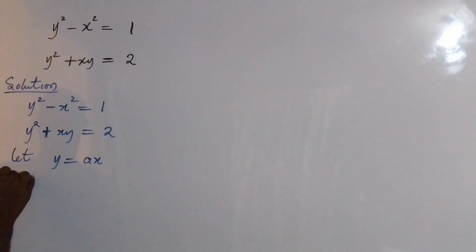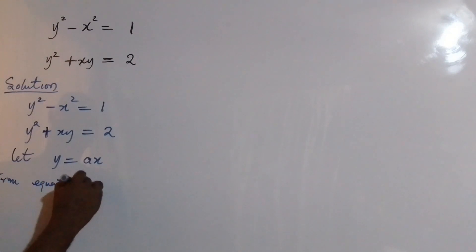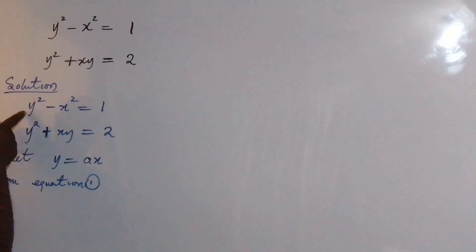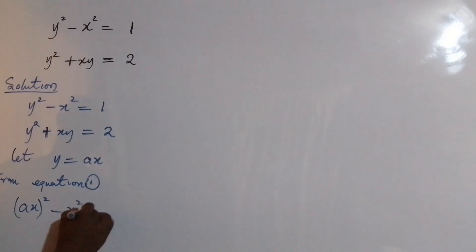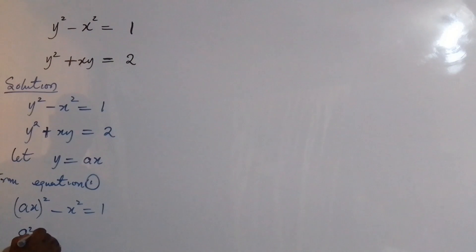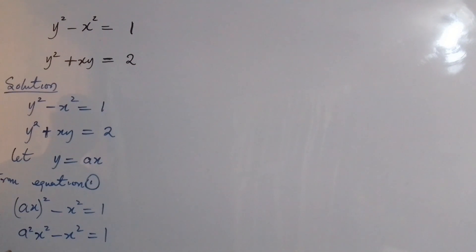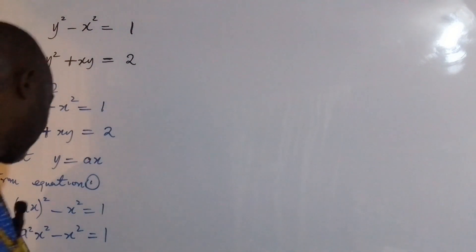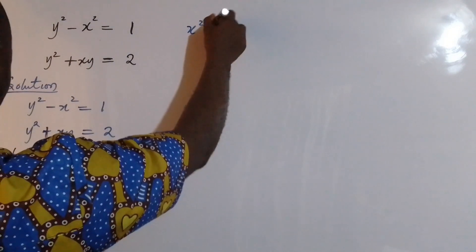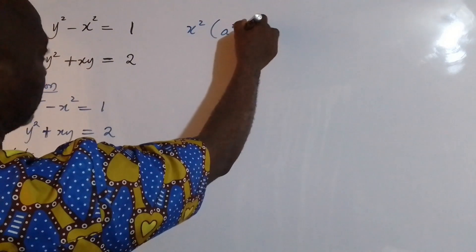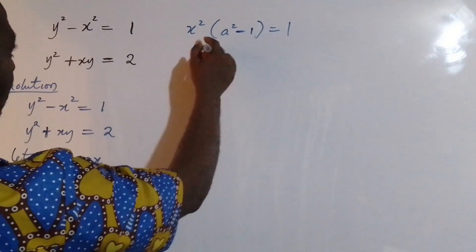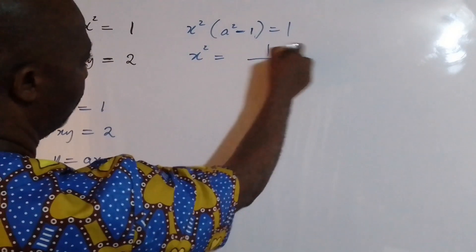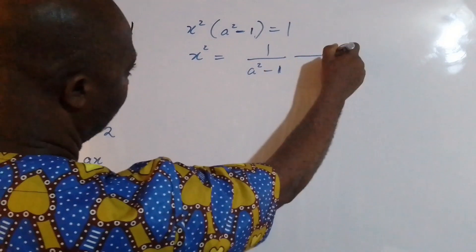From equation 1, y squared minus x squared now becomes ax squared minus x squared equal to 1. So this becomes a squared x squared minus x squared equal to 1. If I factor out x squared, I get x squared times (a squared minus 1) equal to 1. Making x squared the subject, x squared equals 1 over (a squared minus 1). I'm going to call this equation 3.